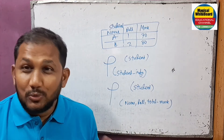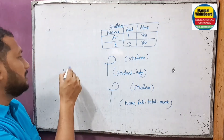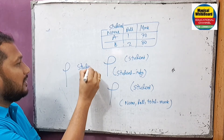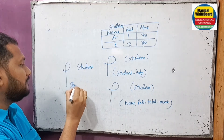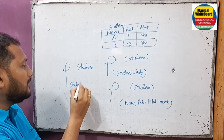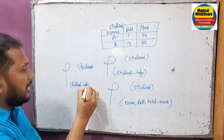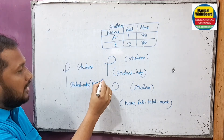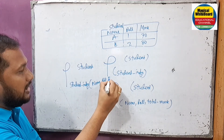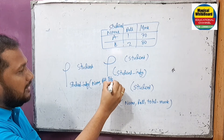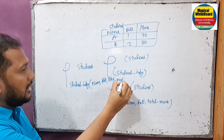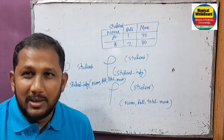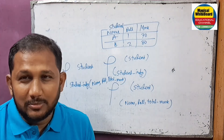If you change the marks attribute, it will be renamed. The student table will be renamed, and the attributes — name, role, and total marks — will also be renamed. That is how we rename the table and its attributes using the Rename Operator. You can see the three methods.